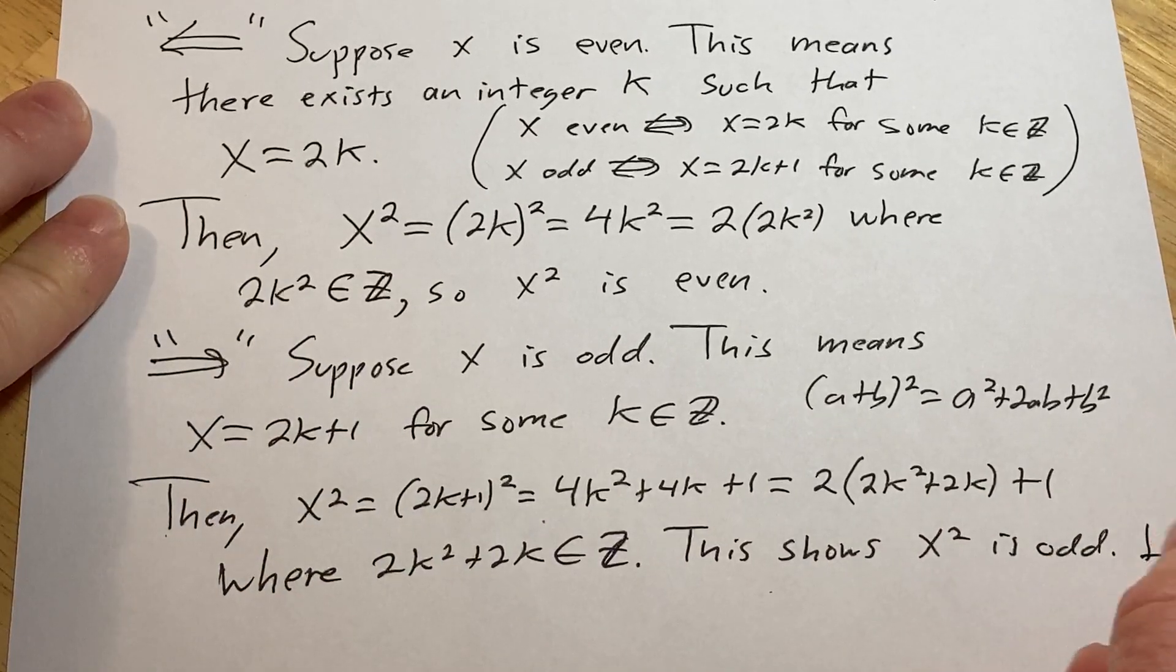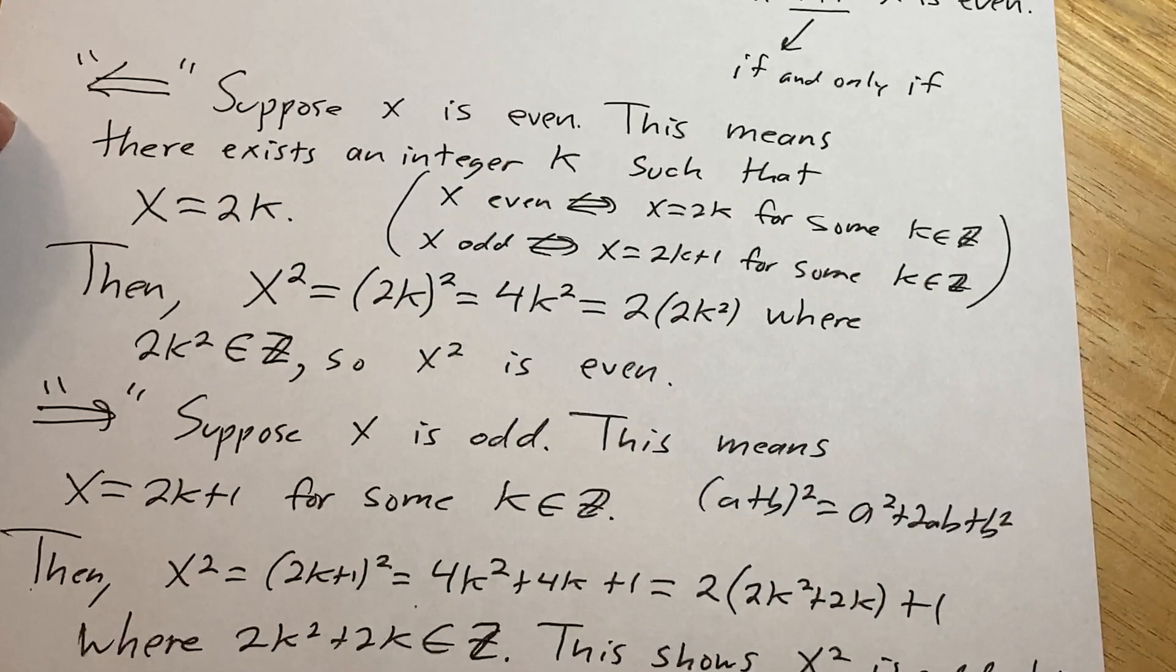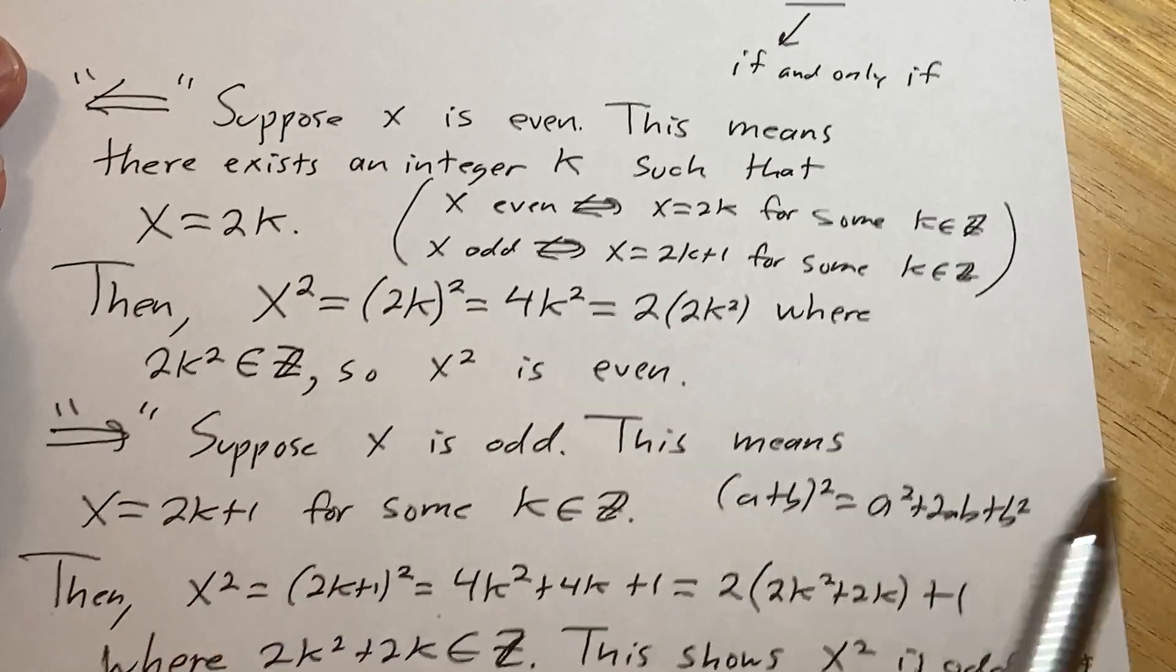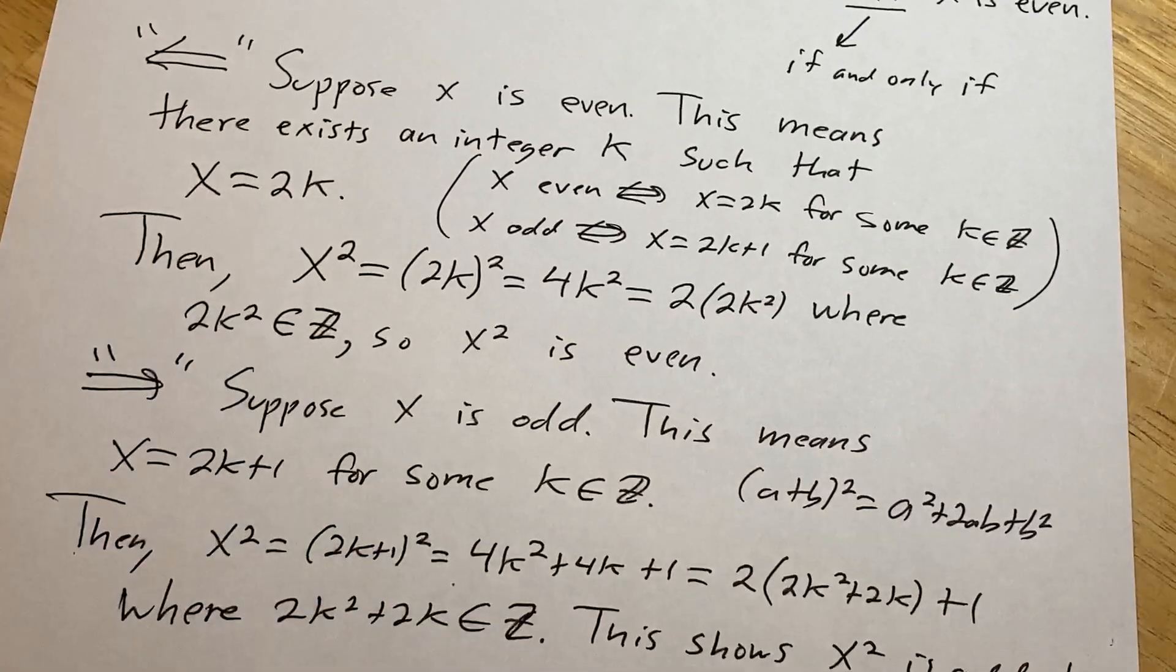And that completes the proof. We're done. Because we showed both directions. So that's it. Interesting proof. We had to prove two directions. And for this direction, we used the contrapositive. So hopefully, this proof has helped you in some way. Good luck.